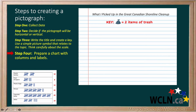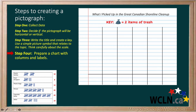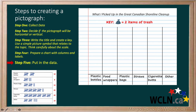Holly has 6 categories, so her chart needs to have 6 columns. Her largest number is 25 cigarette butts — she needs 12 and a half trash bags, which will need 13 lines. She counts down 13 lines to draw a line where her pictograph symbols will start, then draws lines to create 6 evenly spaced columns and adds the category labels. Since the same scale is used, the number of trash bags is the same as the horizontal pictograph — each trash bag represents 2 items of trash. They are drawn starting from the bottom, so they get taller to show more items.